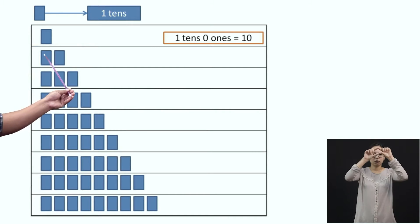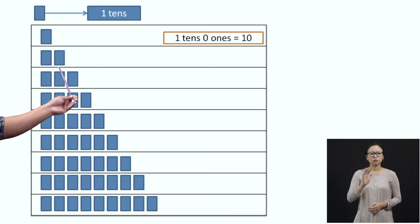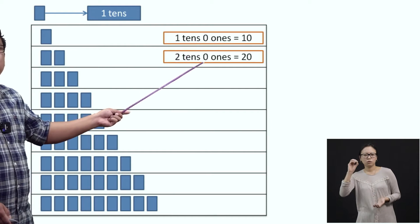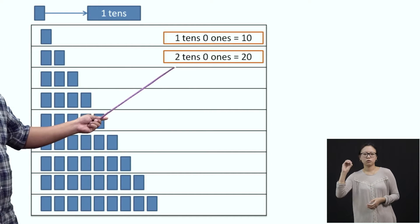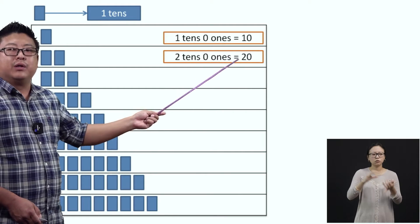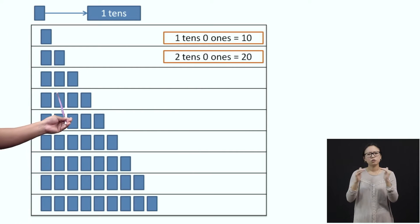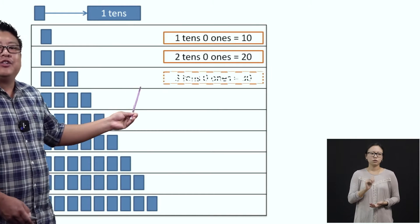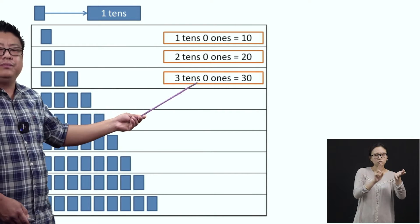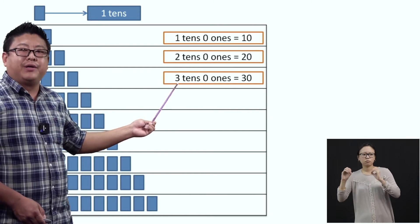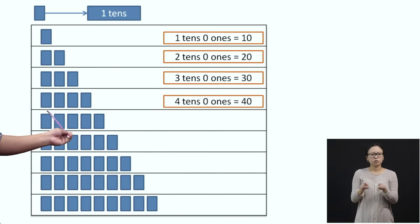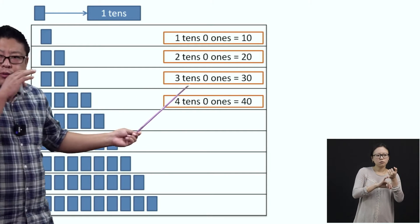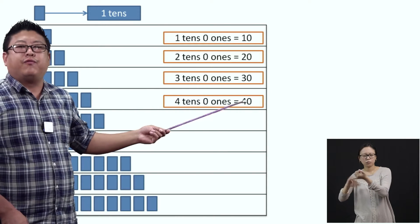In the second column, we have two blue strips. So, we can write it as two-tenths, and since we don't have any representation for ones, we will consider it to be zero. So, two-tenths and zero-ones is equal to twenty. Now, let us look at the second row: one, two, three blue strips. This means three-tenths, and since there's no ones here, we will consider it as zero-ones. When you combine three and zero, you get thirty. Similarly, four blue strips — four-tenths, zero-ones — when we combine, we get forty.